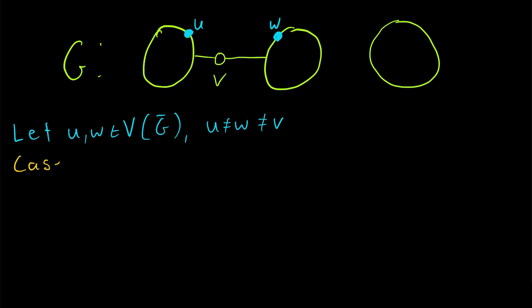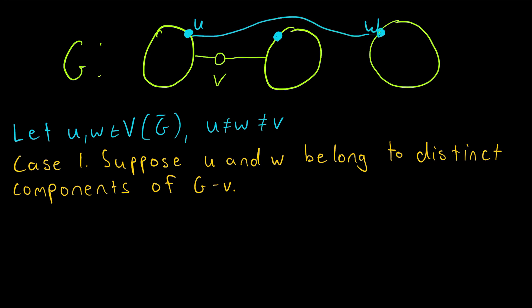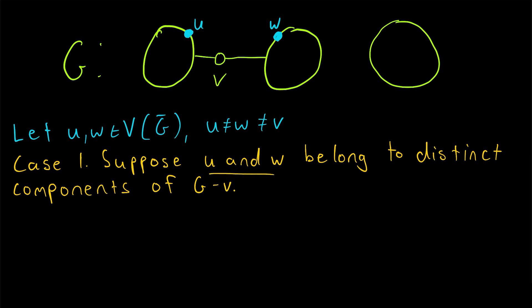We can break the remainder of the proof into two cases. The first possibility is that U and W belong to distinct components of G minus V. This means that in G, U and W certainly can't be joined by an edge — they cannot be adjacent. Deleting V can't possibly remove an edge joining two other vertices, so U and W being in distinct components means UW is not in the edge set of G.